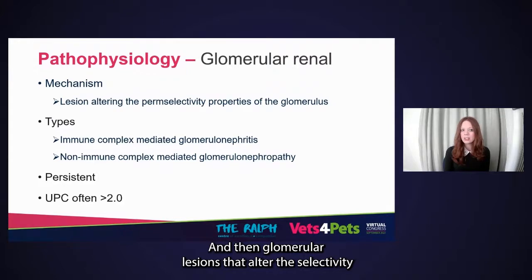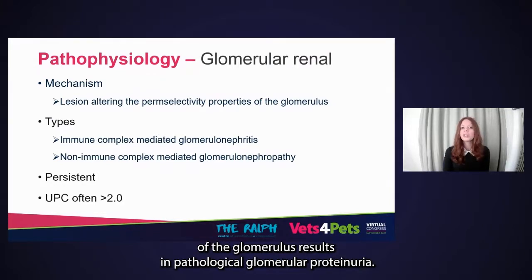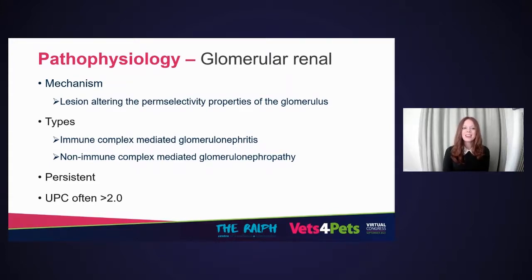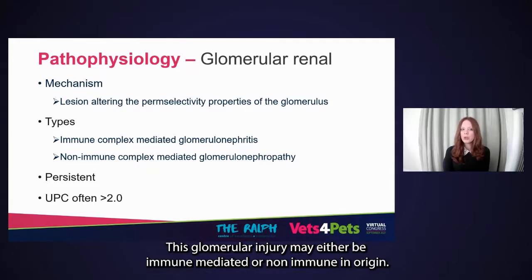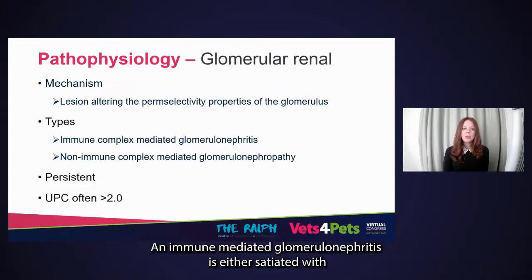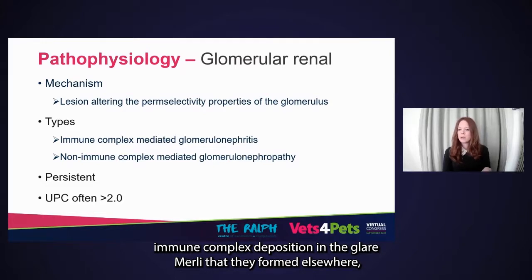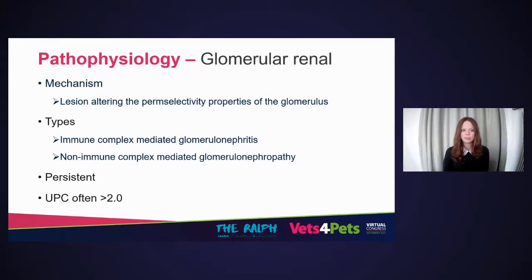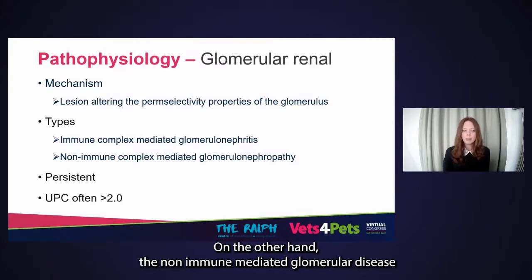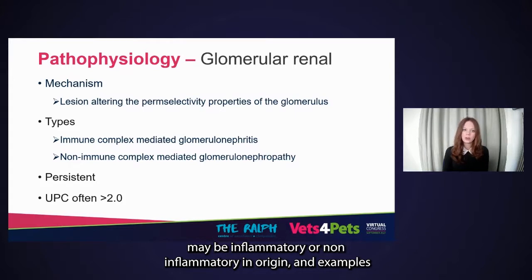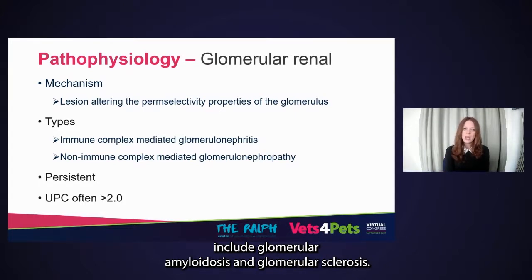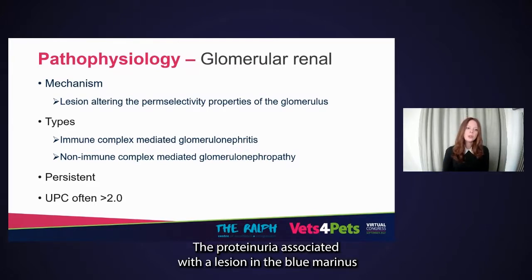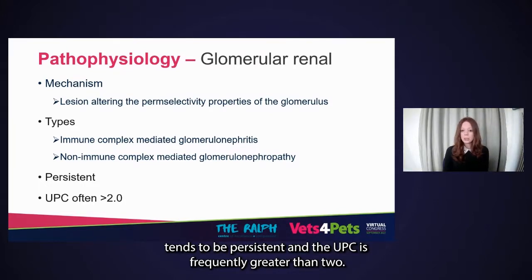Glomerular lesions that alter the permselectivity of the glomerulus result in pathological glomerular proteinuria. This glomerular injury may be immune-mediated or non-immune in origin. Immune-mediated glomerulonephritis is either associated with immune complex deposition in the glomeruli formed elsewhere, or formation of immune complexes in situ. Non-immune-mediated glomerular disease may be inflammatory or non-inflammatory, with examples including glomerular amyloidosis and glomerular sclerosis. Proteinuria associated with a glomerular lesion tends to be persistent, and the UPC is frequently greater than two.